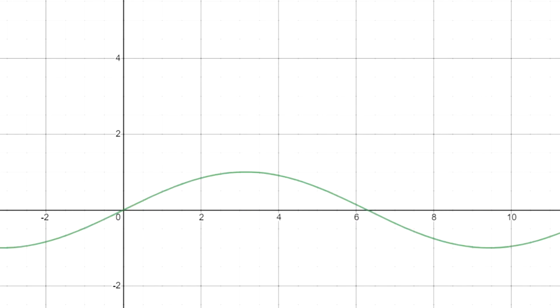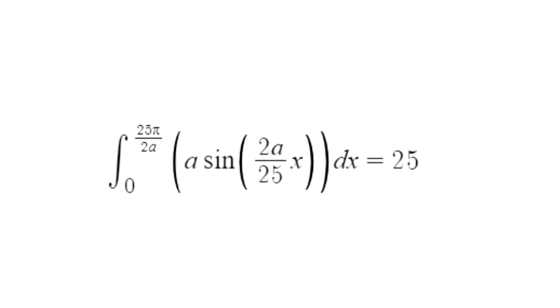The integral from 0 to 25 pi over 2a of a sin the quantity 2a over 25x dx equals 25 is our new formula for any amplitude a, which in this case needs to be 4.